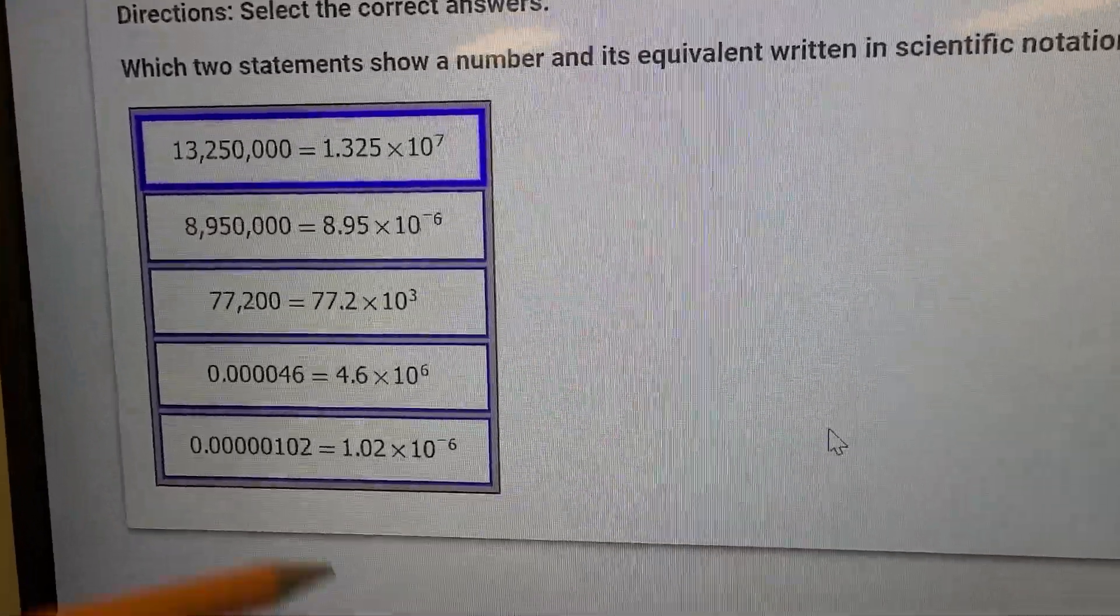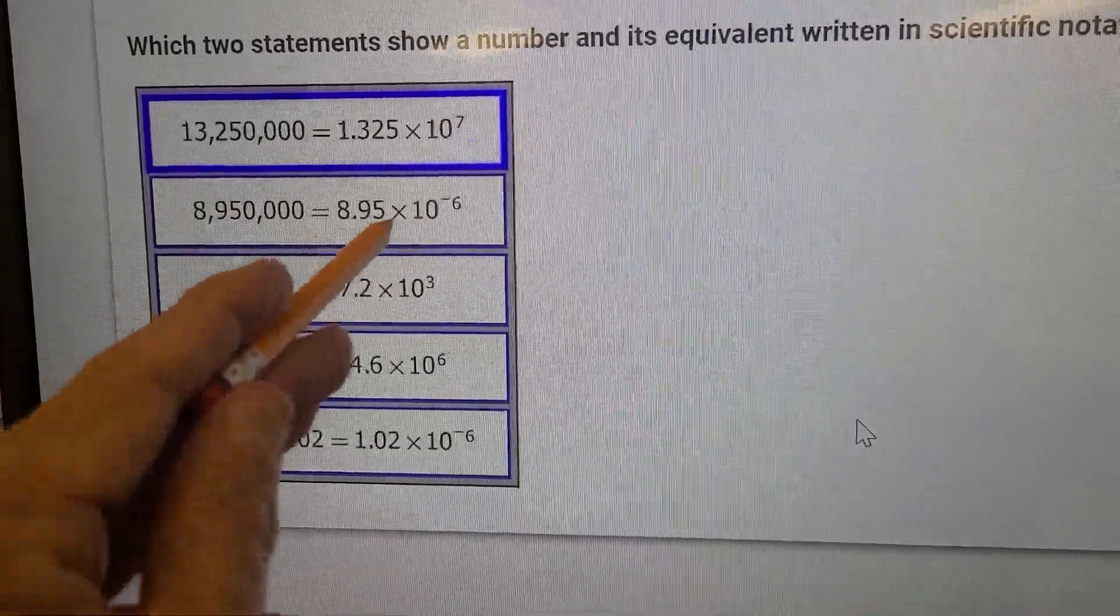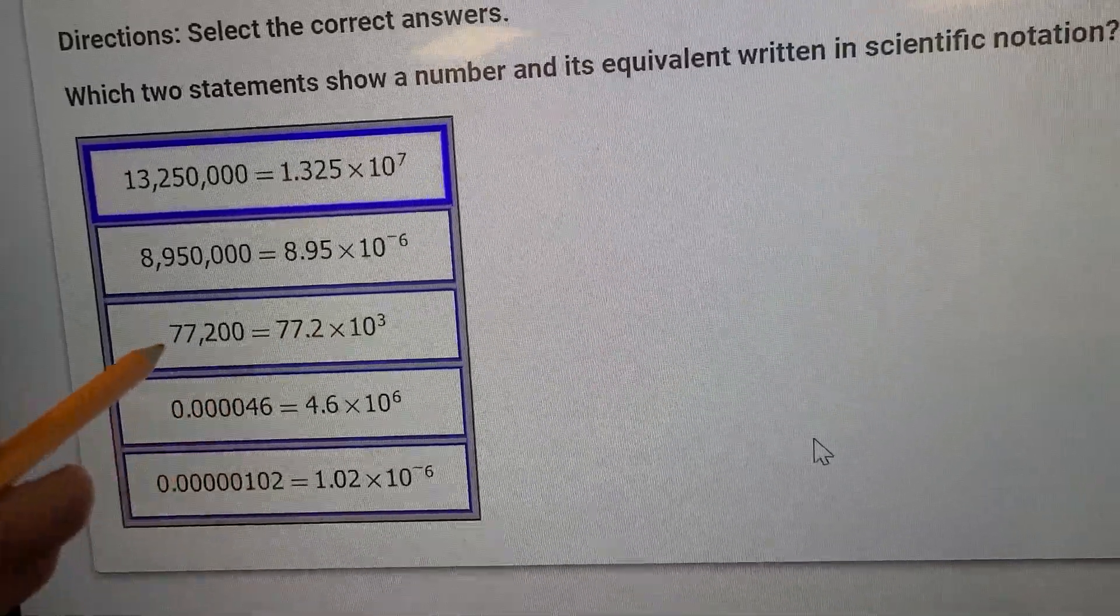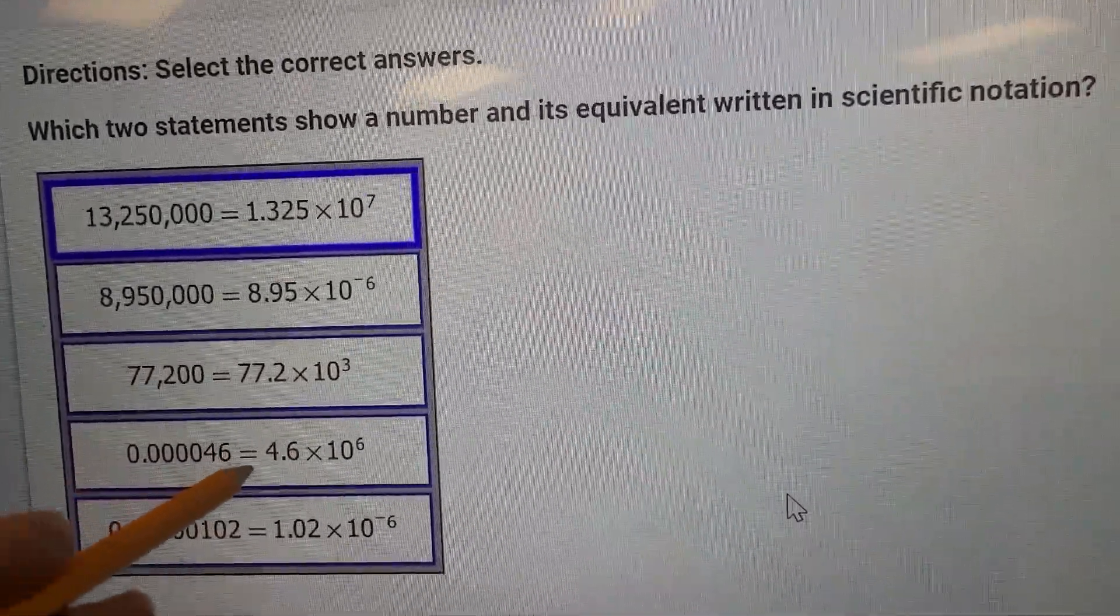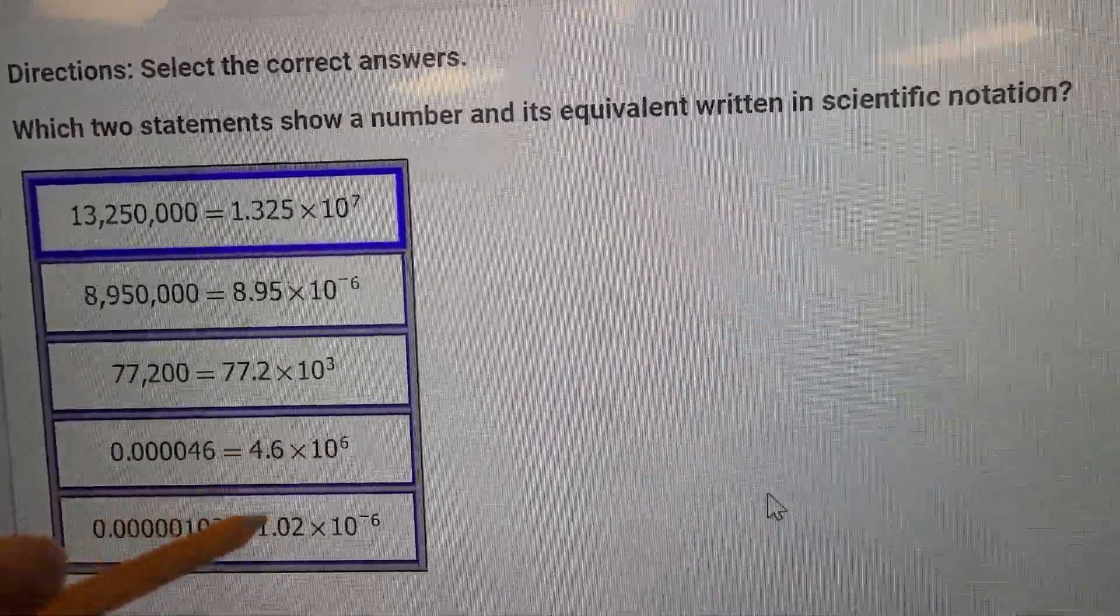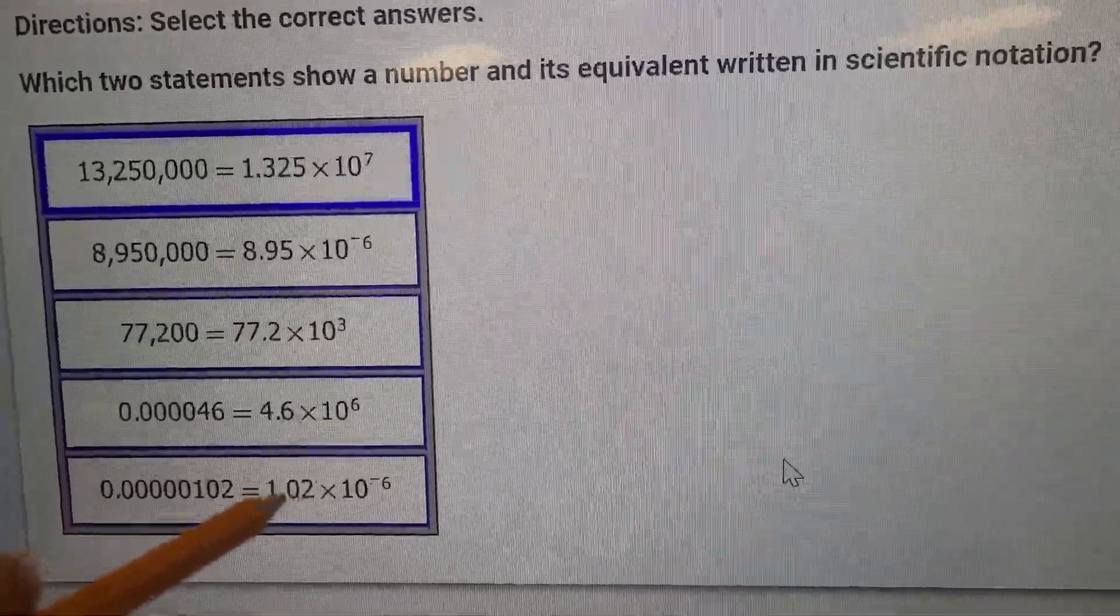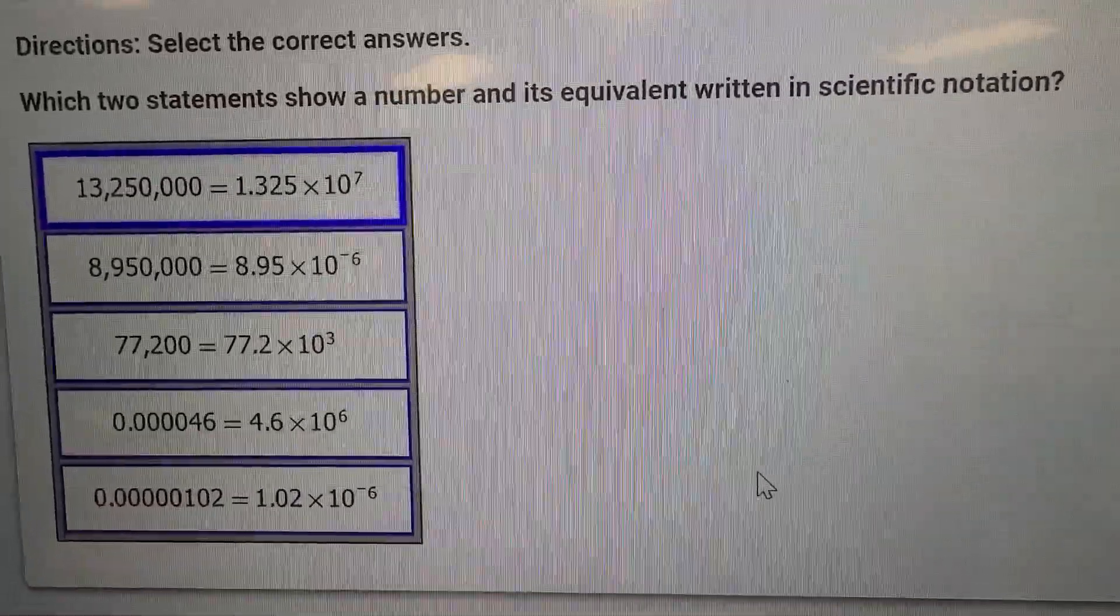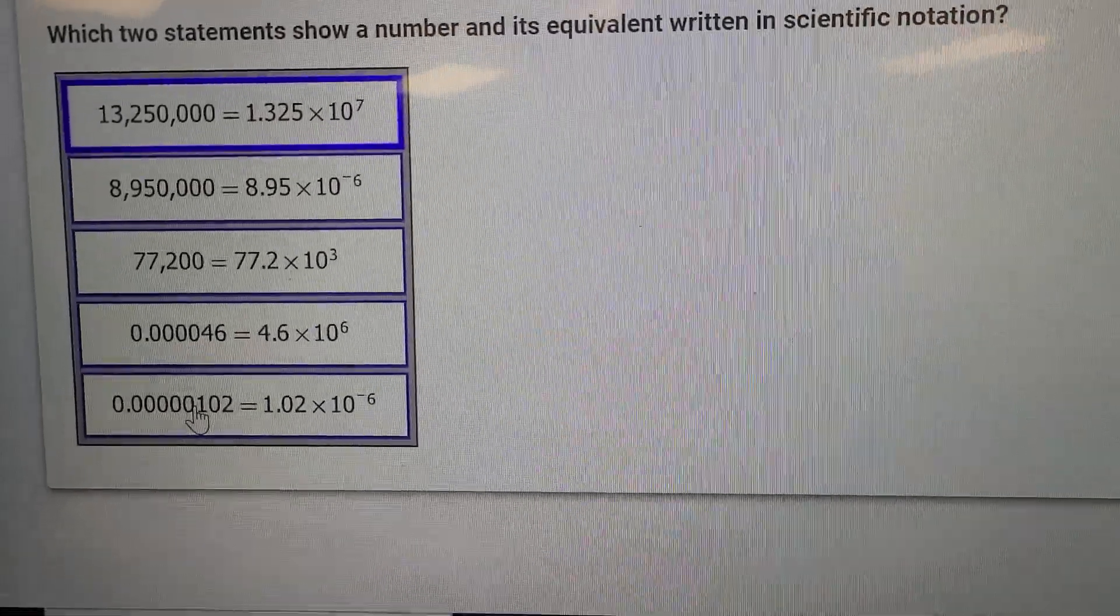This is a big number with a negative exponent, so that's wrong. I'm going to skip it. This one has two numbers in front of the decimal place, so that's not scientific notation. This one is a small number but a positive exponent, which tells me it's a large number, so it can't be that one. This one is 1.02, so far so good, and that is actually six places to the left, so that one works as well.